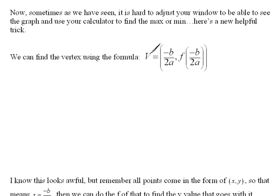This formula says the vertex will equal negative b over 2a, comma, the f of negative b over 2a. Now, I realize that this just looks hideous. But if we take just a minute to try and figure out what it's saying, I think that it's going to look much better to us.